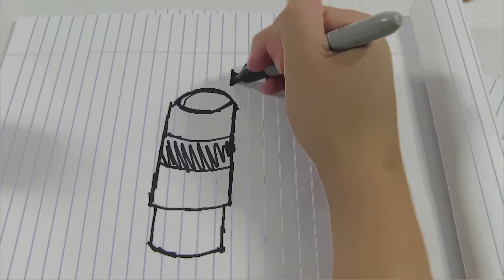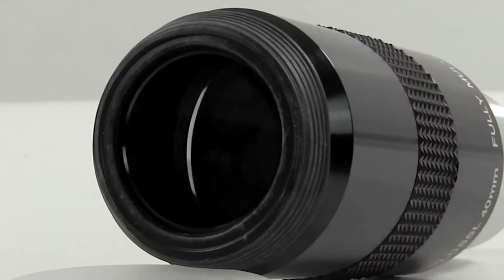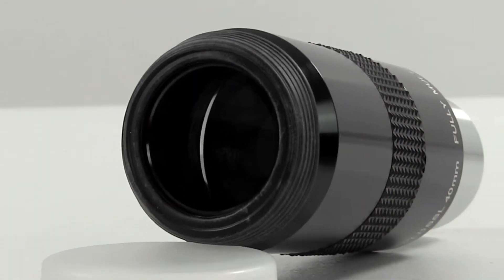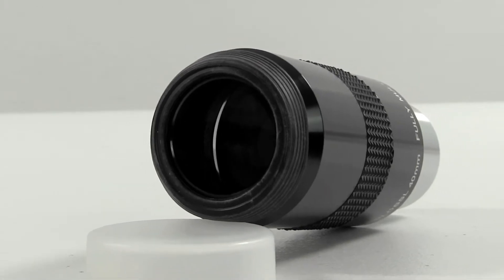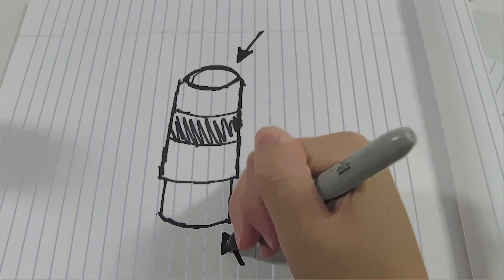Its 20mm of eye relief is great. The eye lens is huge. It weighs in at all of 5.5 ounces, carries a two-year warranty, and has a 40-degree apparent field of view.